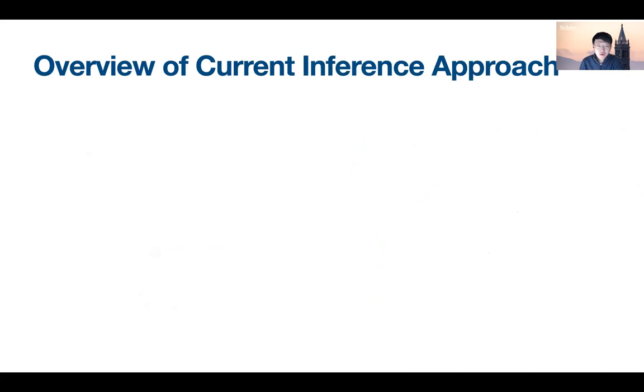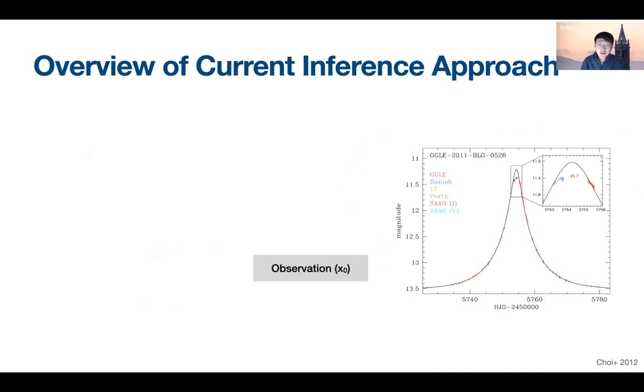I will first briefly touch on the current approach of doing binary microlensing inference. In a classic Bayesian inference setup, we have the observation, the simulator which provides the likelihood function, and the prior. For binary microlensing, blindly running MCMC chains seeded from the prior is typically hard to converge, mostly because of the reasons that I just mentioned, which causes the likelihood surface to be full of local minima.